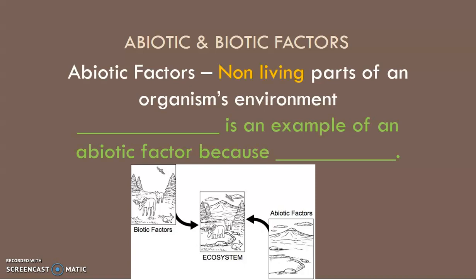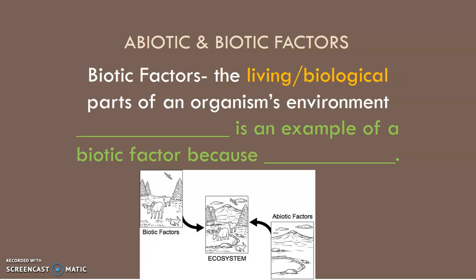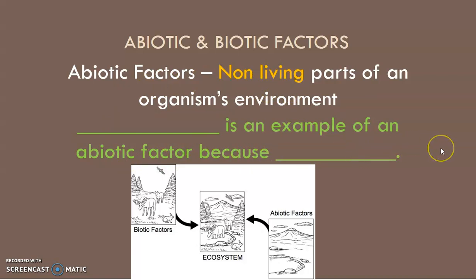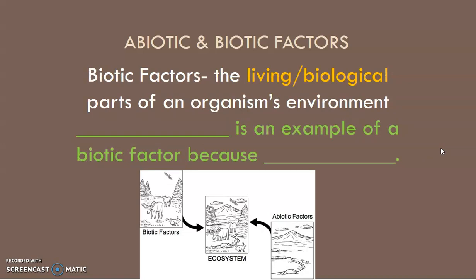An abiotic factor is a non-living part of an organism's environment. For example, a rock is an abiotic factor because it's non-living. Biotic factors are the living or biological parts of an organism's environment. Something like a tree is an example of a biotic factor because it's living.